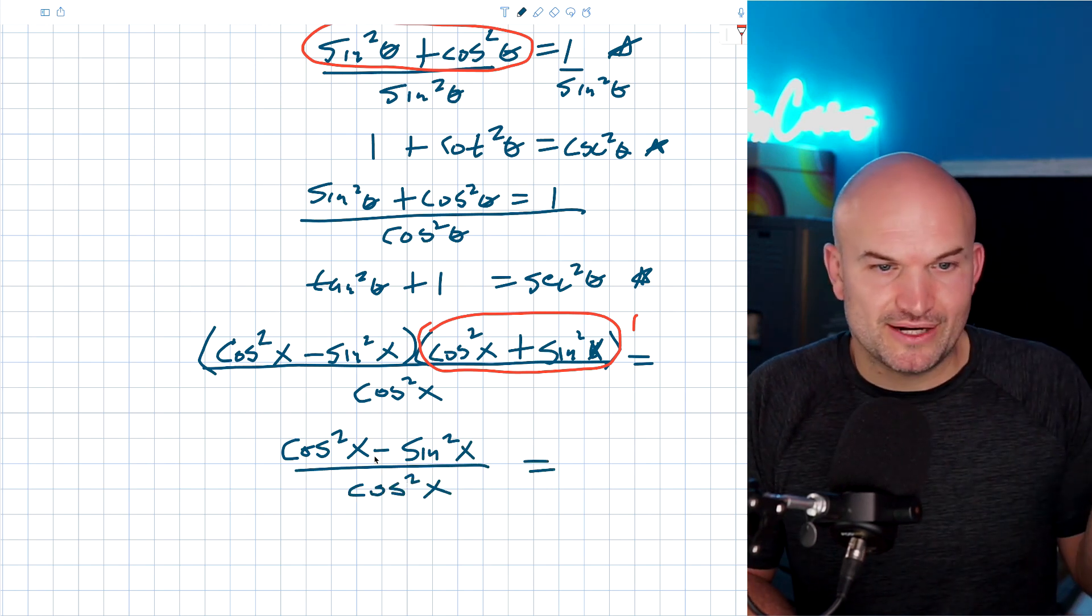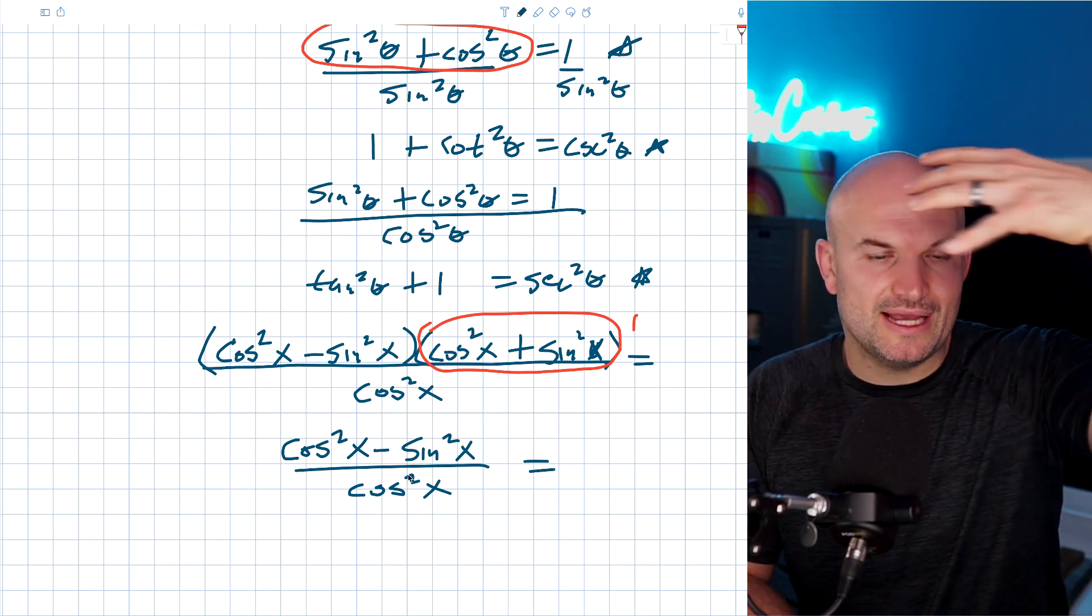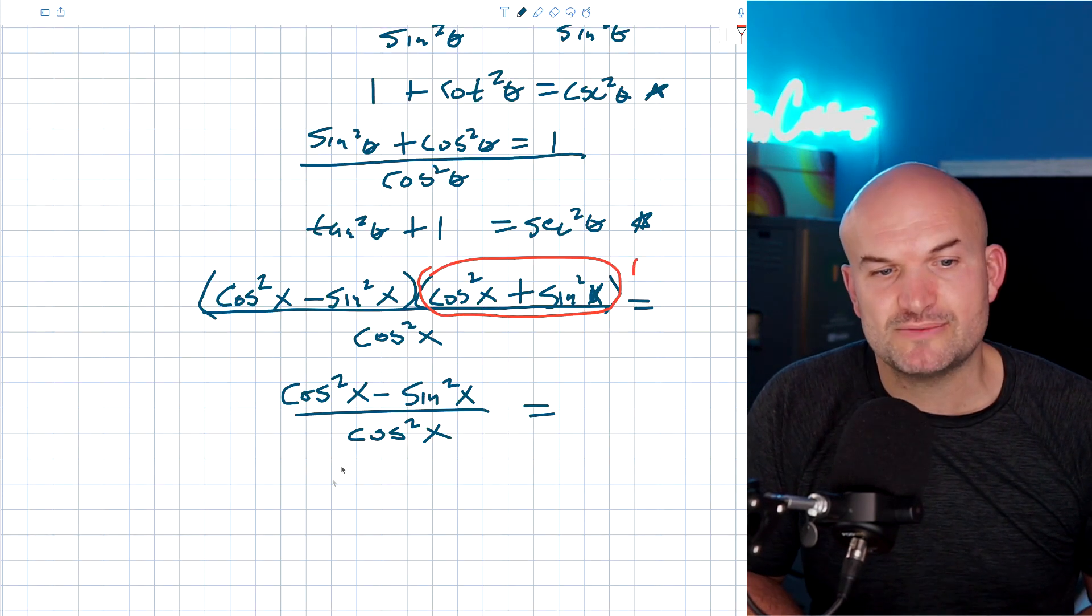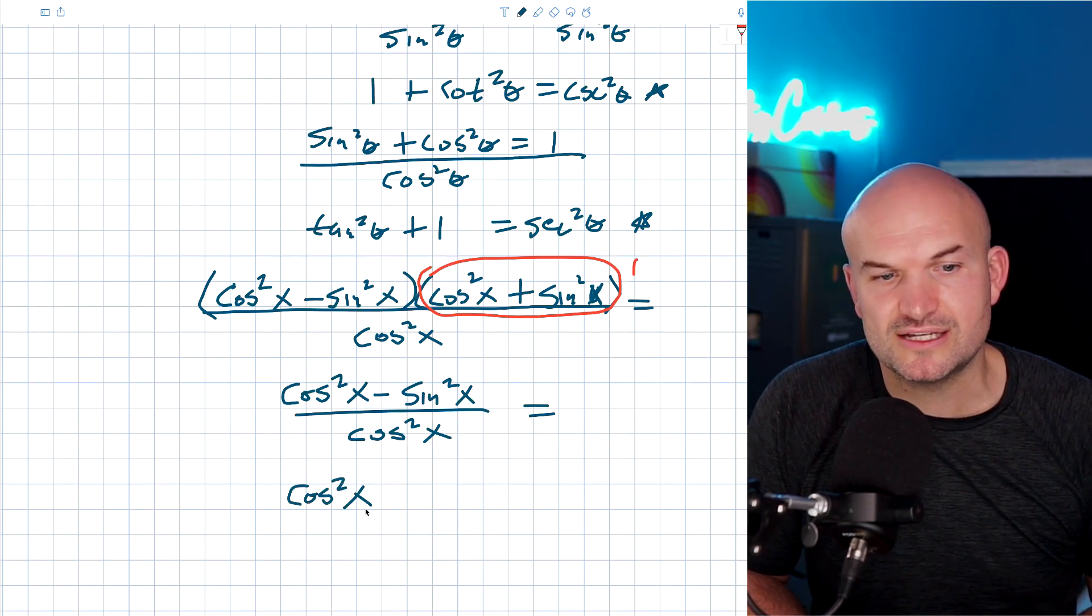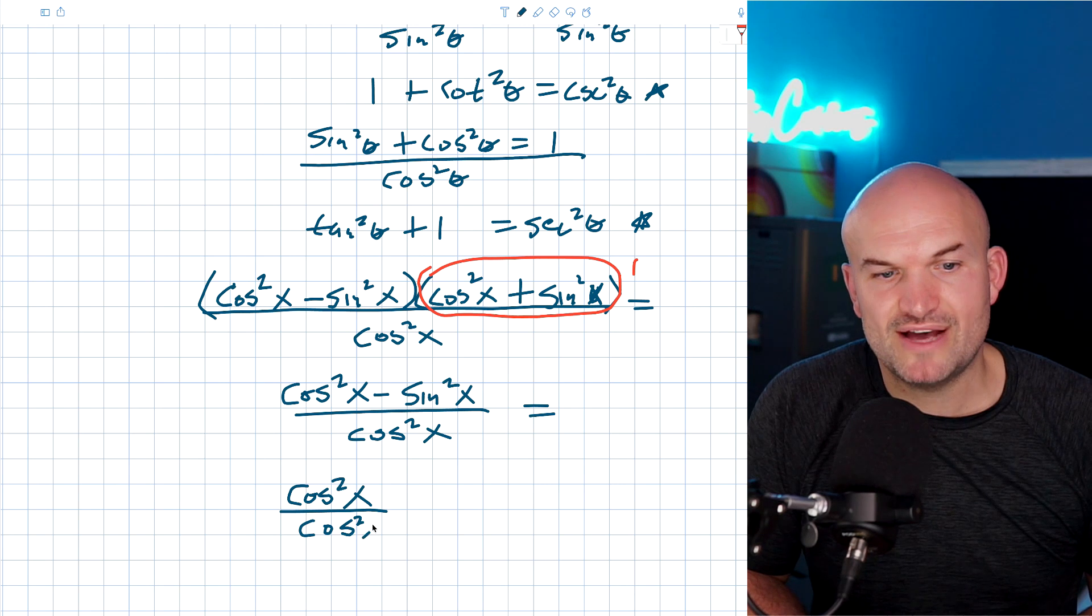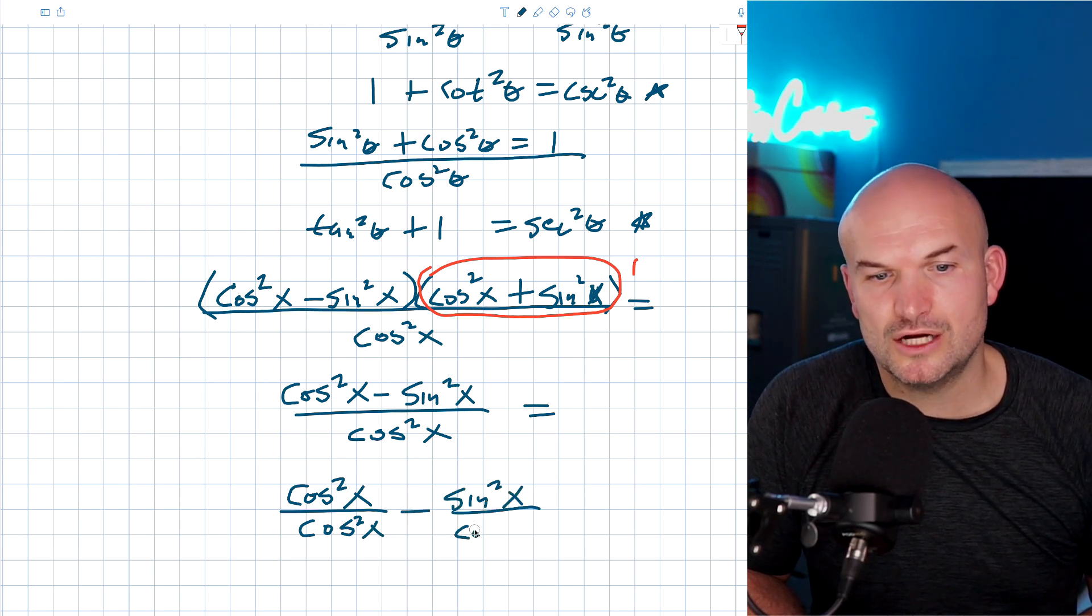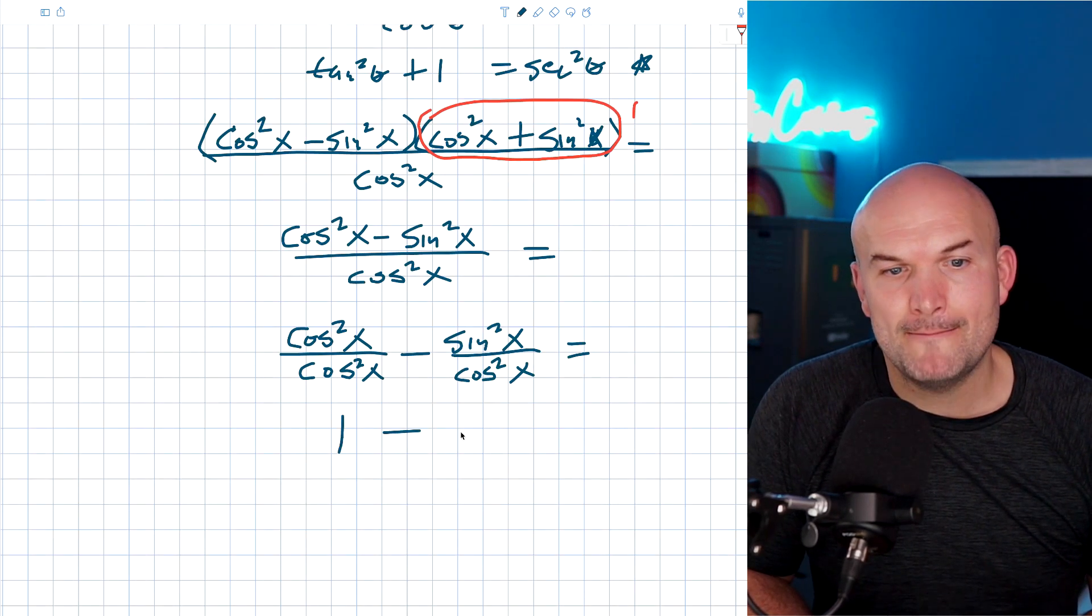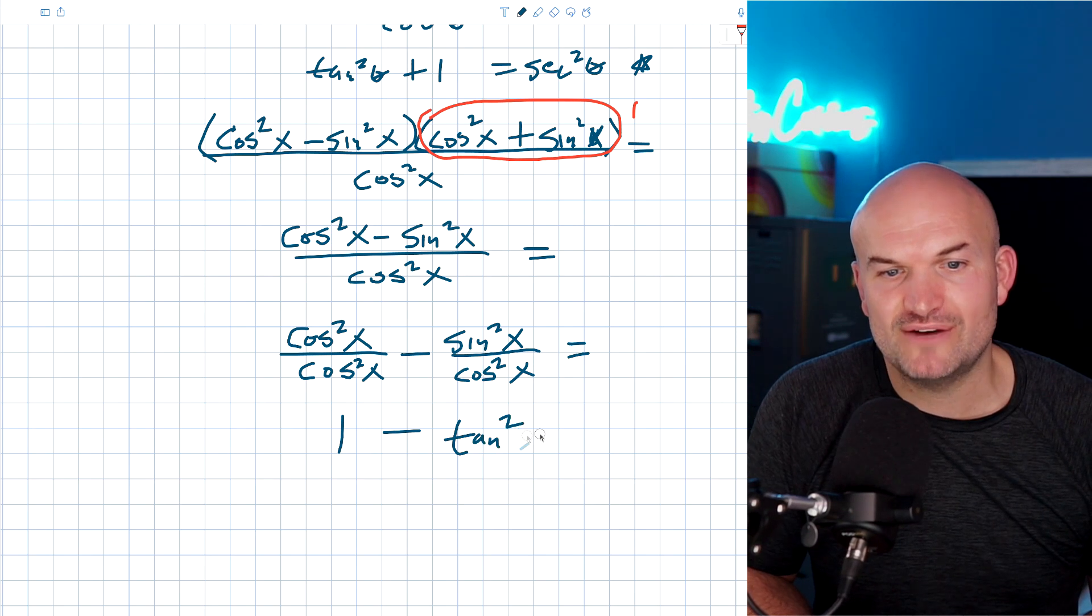Now, the cool thing about here is when you have an expression in the numerator all divided by one term, you can divide this term into both these expressions. So, therefore, I have a cosine squared of x all over a cosine squared of x minus a sine squared of x all over a cosine of x. Now, you can see that this is going to simplify to one minus a tangent squared of x.